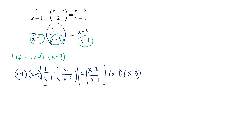Applying cancellation: (x minus 1) divided by (x minus 1) is 1, and (x minus 3) divided by (x minus 3) is 1. So what's left on the left side is 1 times 2, which equals 2. On the right side, (x minus 1) divided by (x minus 1) is 1, leaving (x minus 2) times (x minus 3).